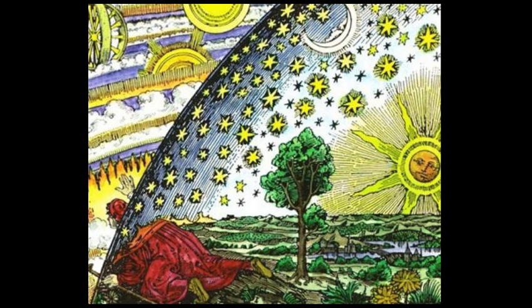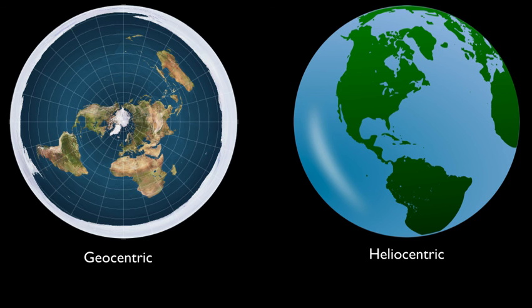Mankind through the centuries has striven to learn as much as possible of our world, and there are two main models under discussion here: the Flat Earth, or geocentric model, and the Globe Earth, or heliocentric model.